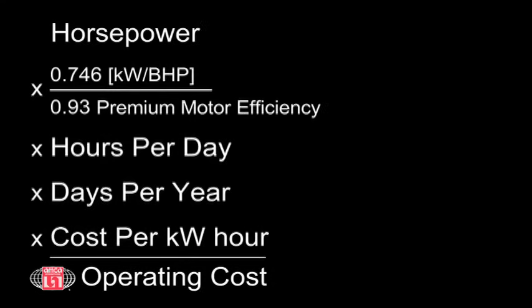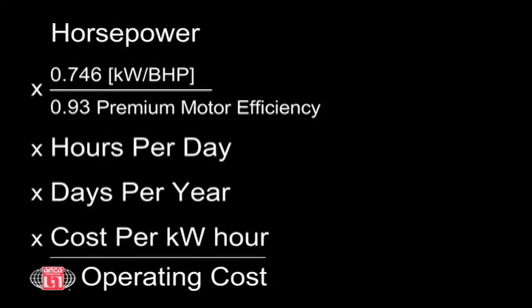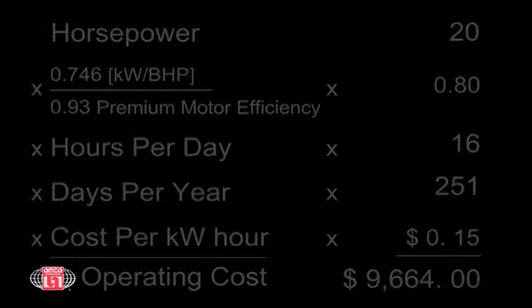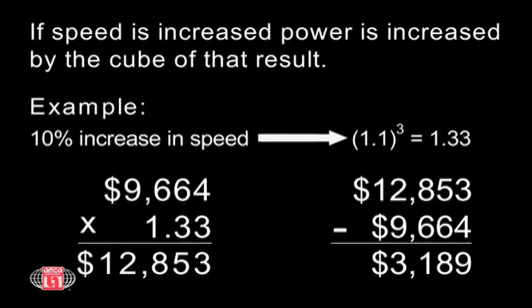Here is the formula for calculating the operating cost of a fan. For example, assume a fan with 20 brake horsepower running 16 hours per day for 251 days per year. At 15 cents per kilowatt hour, the cost of running that fan is nearly $9,700 per year. If we increase that fan speed 10% to compensate for system effect, our new operating cost is nearly $13,000, which is an increase of approximately $3,200 more per year. And that is just for system effect that impacts the inlet side of the fan.